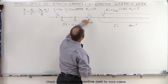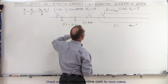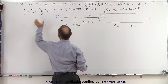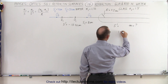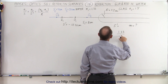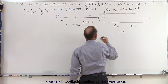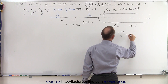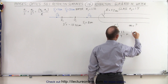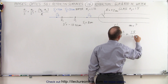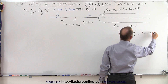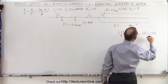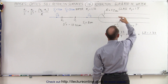Starting with object 2 at a distance of 4 centimeters. Using our equation we have N1 over S, with N1 being 1.33. So 1.33 over S — in this case S is going to be 4 centimeters — plus the index of refraction of the glass, 1.5, over S prime, is equal to N2 minus N1, which is 1.5 minus 1.33, all divided by the radius of curvature, which is a positive 2 centimeters.